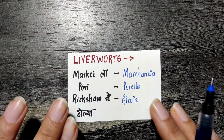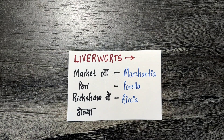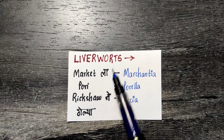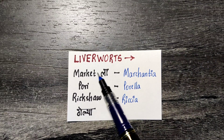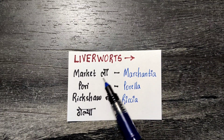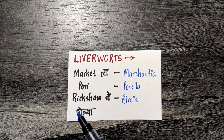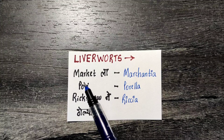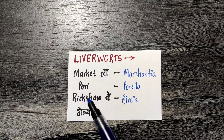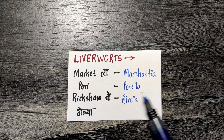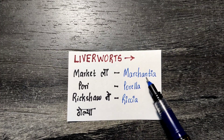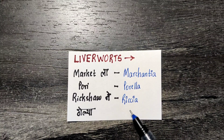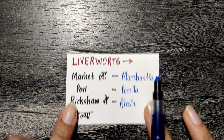Moving on to Bryophyta. The first part is liverworts. The trick is 'market la pori rickshane ghelea': Market is Marchantia, Pori is Porella, and Rick is Riccia. So Marchantia, Porella, and Riccia.